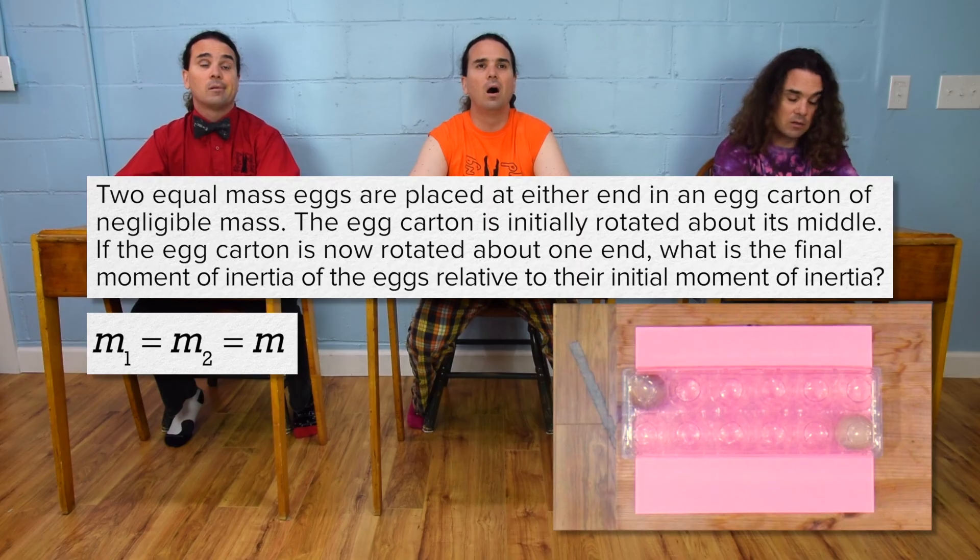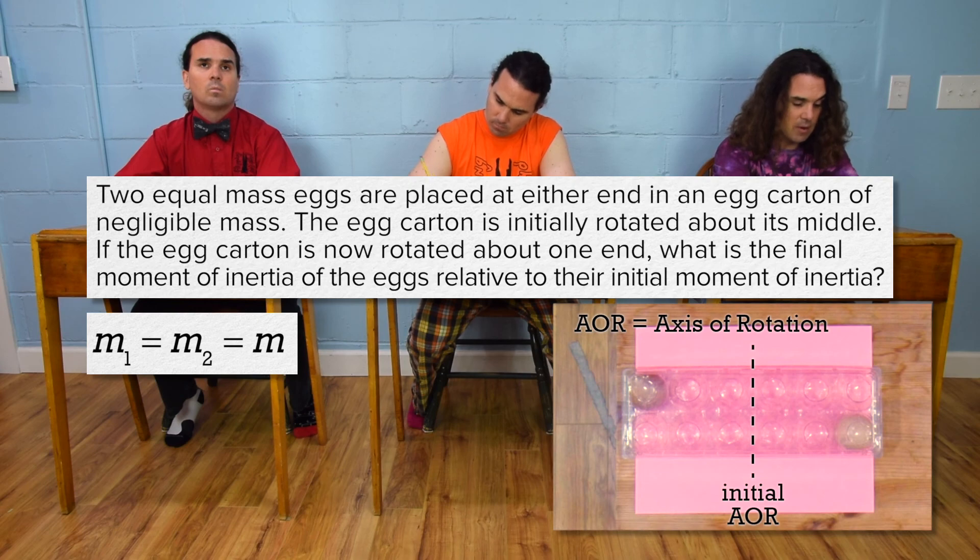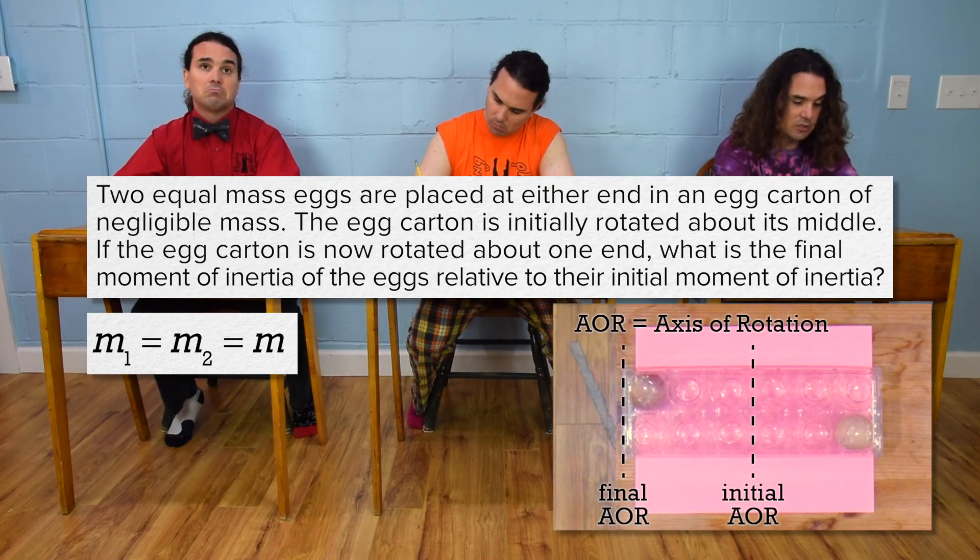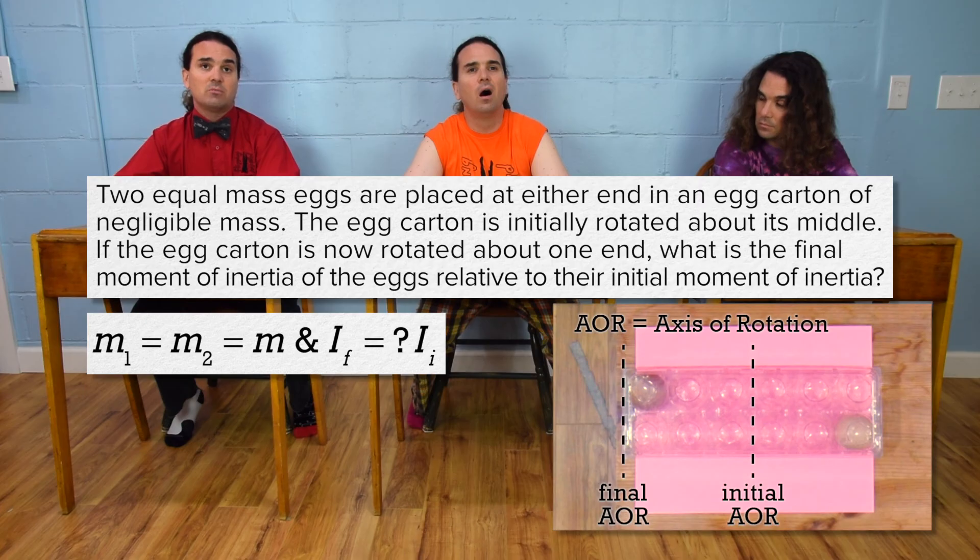Bo? The egg carton is initially rotated about its middle. If the egg carton is now rotated about one end, what is the final moment of inertia of the eggs relative to their initial moment of inertia? Iₓ = ? × Iᵢ